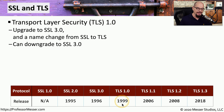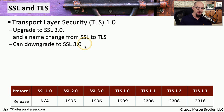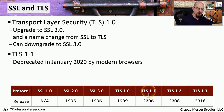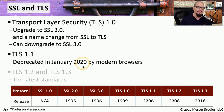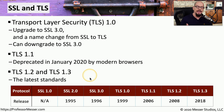After SSL 3.0, the encryption method was renamed to Transport Layer Security, or TLS. TLS 1.0 was released in 1999 as an effective upgrade to SSL 3.0, but it has a downgrade functionality that allows it to communicate with SSL 3.0, making it insecure as well. TLS 1.1 was released in 2006 but deprecated in January 2020 by most modern browsers. As of the end of 2020, TLS 1.2 and 1.3 are the latest standards commonly used to communicate with web servers.